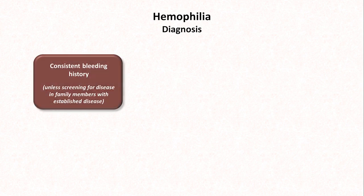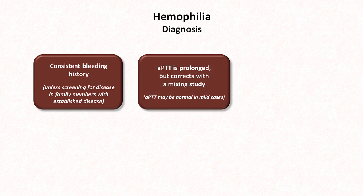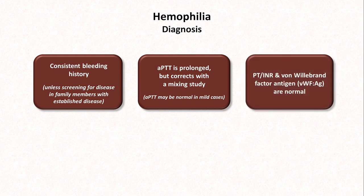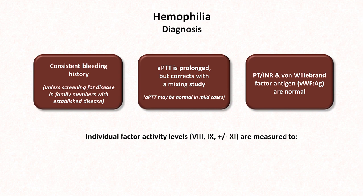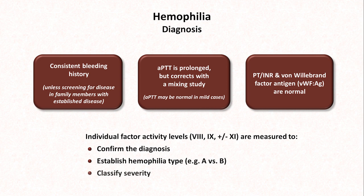A diagnosis of hemophilia should be suspected by the combination of three findings. First, a consistent bleeding history, unless the diagnosis is being considered while screening family members of a person with established hemophilia. Second, the PTT is prolonged but corrects with a mixing study, though the PTT may be normal in mild cases. Third, the PT, INR, and von Willebrand factor antigen are all normal. If these three things are present, individual factor activity levels should be measured to confirm the diagnosis, establish the hemophilia type, and classify its severity.